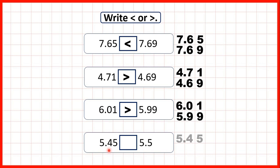Now we have 5.45 and 5.5. We write out both numbers with the decimal points lined up, remembering to write 0 in the empty square. Both numbers have 5 ones, but the first number only has 4 tenths and the second has 5 tenths, so 5.5 is our larger decimal.